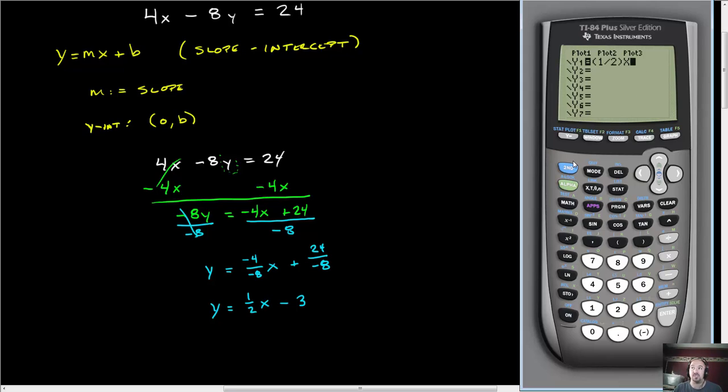As a side note, if I had, for instance, a theta show up, all I have to do is go into mode. Search through your settings until you find function. Make sure FUNC is highlighted. Pull down to it, press enter and that will highlight it. Then you can go back to Y equals and replace your value with the X value. It may do it automatically. Finally, minus 3. And now it looks exactly like the equation that we had.